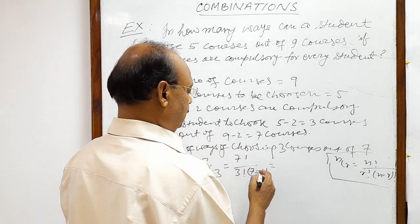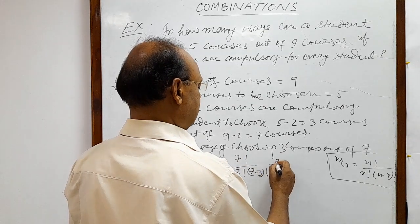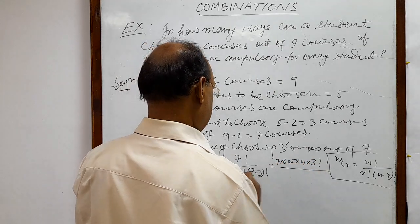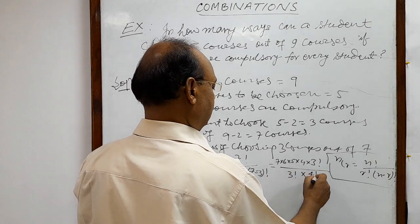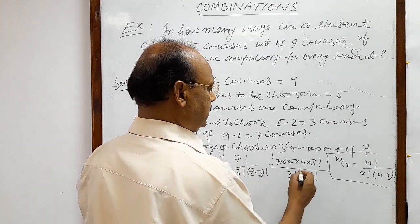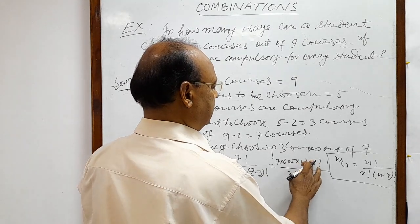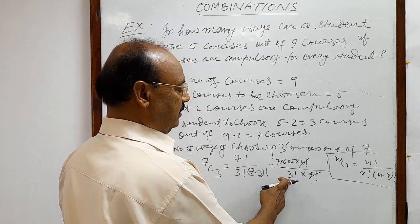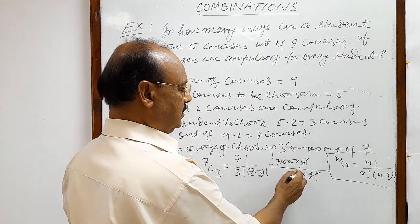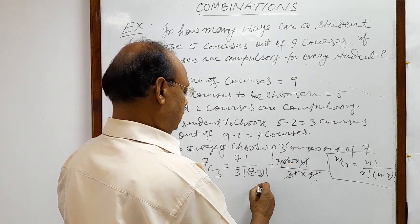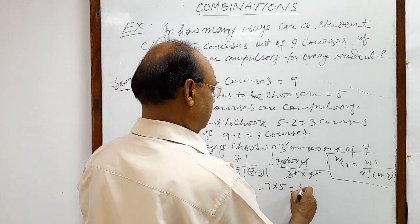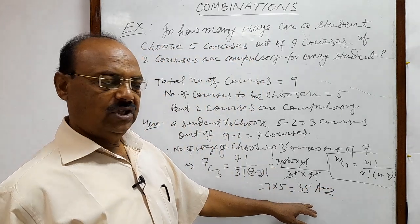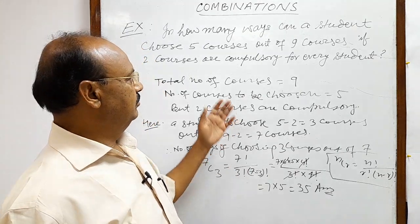Seven factorial is seven into six into five into four into three factorial, divided by three factorial into four factorial. The four factorial cancels out, and three factorial equals one into two into three, which is six. This six also cancels out the six from the numerator, leaving seven into five, which equals 35.